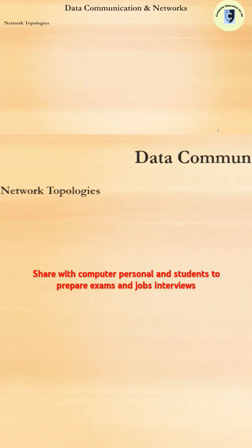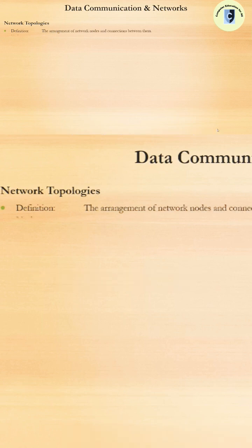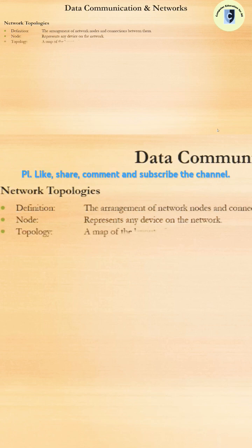Network Topologies: The arrangement of network nodes - any devices which are part of a network - and connections between them, is called the network's topology. A node represents any device on the network. Topology is simply a map of the layout of nodes and connections in the network.